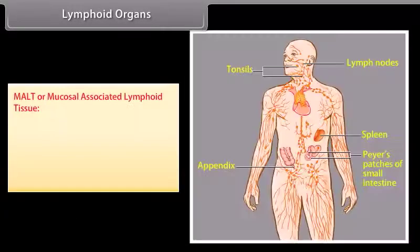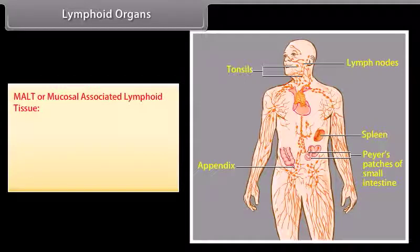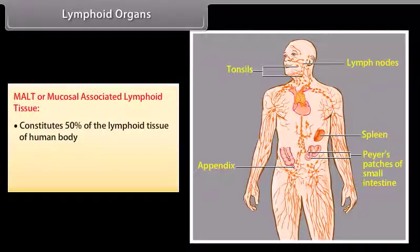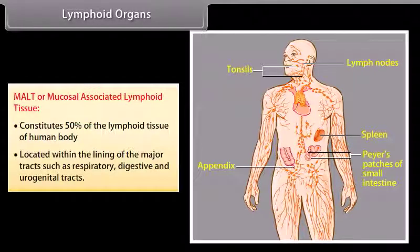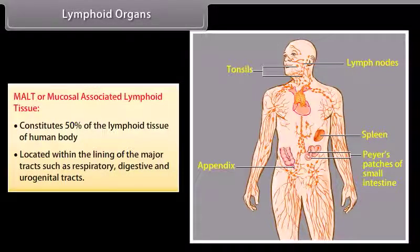MALT, or mucosal-associated lymphoid tissue, constitutes 50% of the lymphoid tissue of the human body and is located within the lining of the major tracts such as the respiratory, digestive, and urogenital tracts.